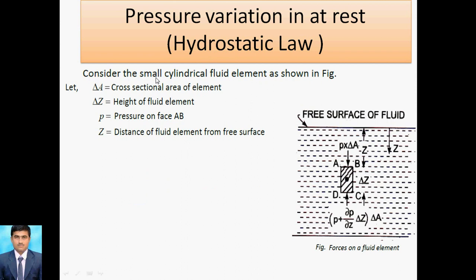To prove hydrostatic law, we consider a small cylindrical element ABCD. Delta A is the cross-sectional area and Delta Z is the height of the fluid element. Pressure P acts on face AB, and Z is the distance of the fluid element from the free surface (i.e., from the air).